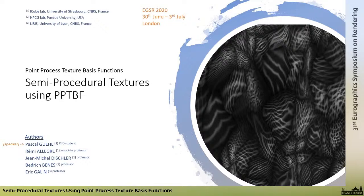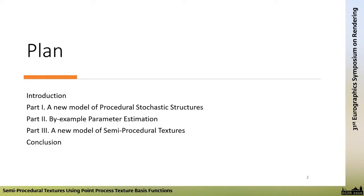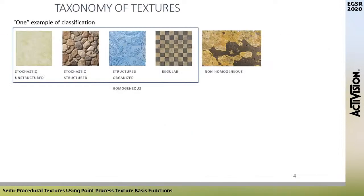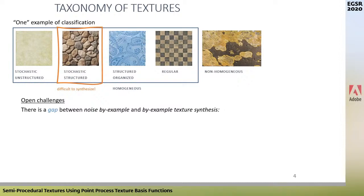Hi everyone, I'm happy to present our new model of procedural textures. The plan is straightforward: we will present our new model of procedural structures, how to estimate its parameters by example, and how to synthesize with it. First, look at a taxonomy of textures. On the left you have noise textures — Gaussian ones — and the more you go to the right, the more you add structures inside, until near-regular, regular, and non-homogeneous ones. Stochastic structures are really difficult to synthesize; there is a gap between noise-by-example and by-example texture synthesis.